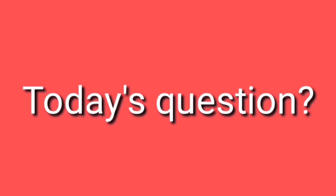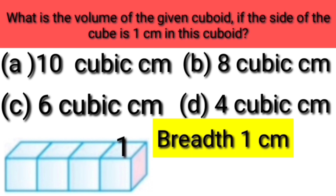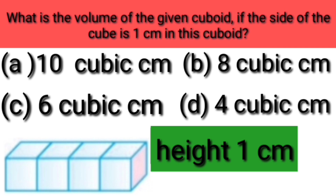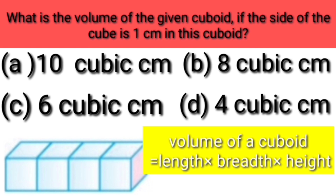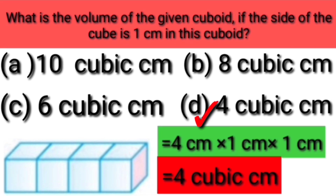Now it's time for today's question. Find out the volume of the given cuboid, if the side of the cube is 1 cm. There are 4 options and we have to tick the correct one. The cuboid has length 4 cm, breadth 1 cm, and height 1 cm. Volume is length into breadth into height, which gives us 4 cubic cm. Option D is correct — we have to tick mark this option.